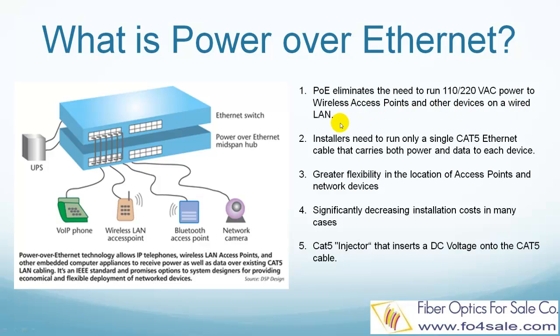The network installers only need to run a single Cat5 Ethernet cable that carries both power and data to each device. This allows greater flexibility in the locating of access points and network devices.